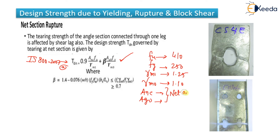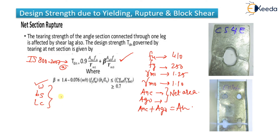The beta value in the angle formula is given by: β = 1.4 − 0.076 × (w/t) × (fy/fu) × (bs/Lc), subject to β ≤ fu × γm0 / (fy × γm1) and β ≥ 0.7. Here t is the thickness of the angle, and w, bs, and Lc will be explained in the numerical examples.